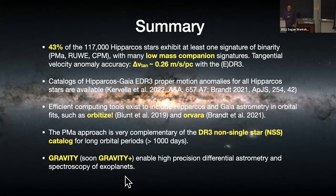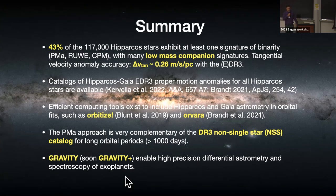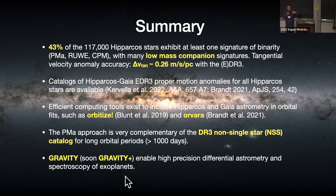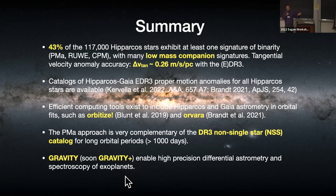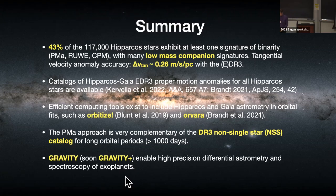On the question of whether the 43% of Hipparcos stars showing binarity signs are mostly known binaries: many are already known, many at stellar mass. It depends on distance — we are more sensitive to binary companions for nearby stars, and Hipparcos stars are spread at all distances, so it's not a nearby-star catalog. Many of these stars are known binaries, but also many are newly identified. Thank you very much for an excellent talk.